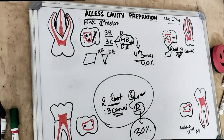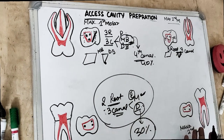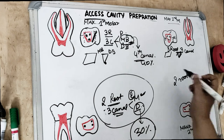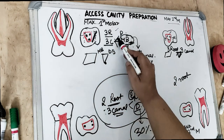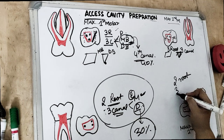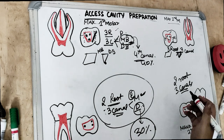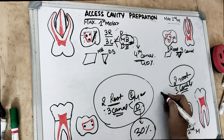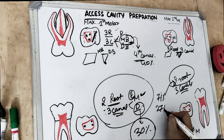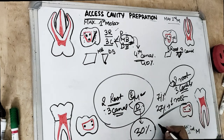Coming to the mandibular second molar — it is smaller compared to the first molar. The access cavity is similarly trapezoid, with two roots and three canals. For the mandibular second molar: 71% of the time there are two roots, 27% chances of only one root, and 2% chances of three roots.